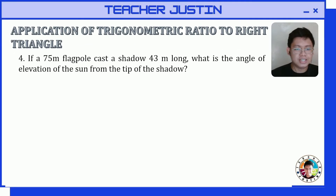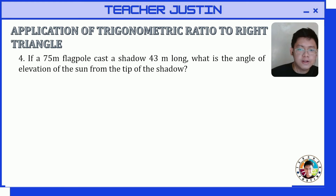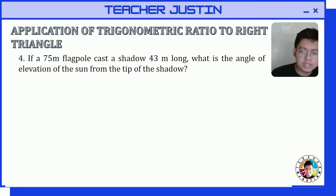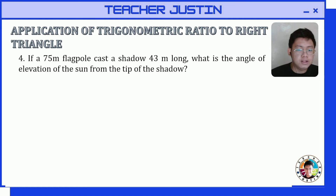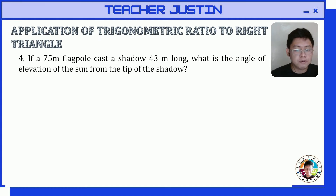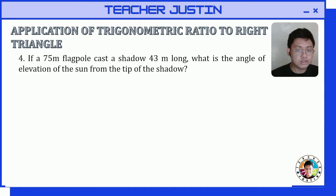Let's have this example: if a 75-meter flagpole casts a shadow 43 meters long, what is the angle of elevation of the sun from the tip of the shadow?